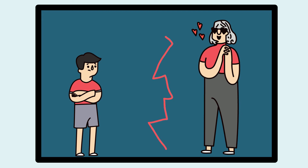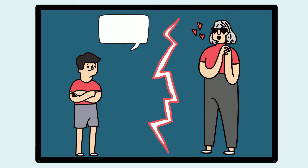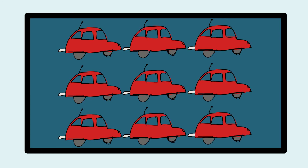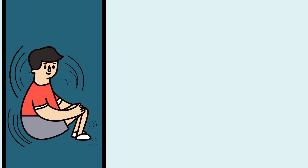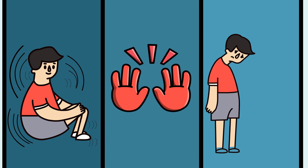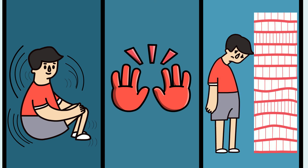They show serious abnormalities in communication and language that persist over time. Many of them never develop speech, and those who do have repetitive and deviant speech patterns. Such children often show narrow patterns of interest and repetitive behaviors such as lining up objects, or stereotyped body movements such as rocking.